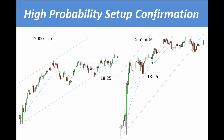We just broke resistance and price created a breakout pullback pattern — a two-legged move down — and we are at the key entry point. I take a look at the five minute chart and I see that price is in an uptrend with a spike and channel formation. By the time I'm about to enter, price forms a new high, a first entry long fails, and the second entry long forms a big bullish bar off the key entry point. This is a high probability setup confirmation.